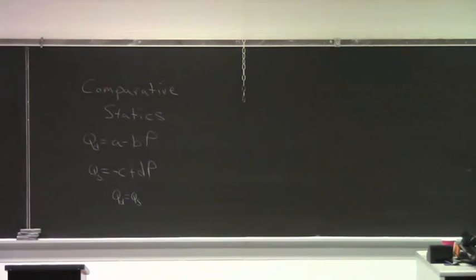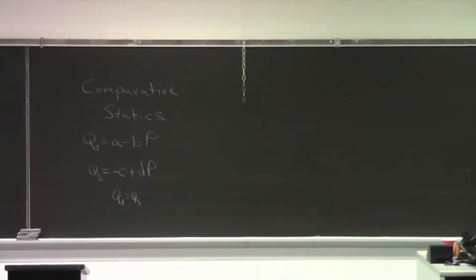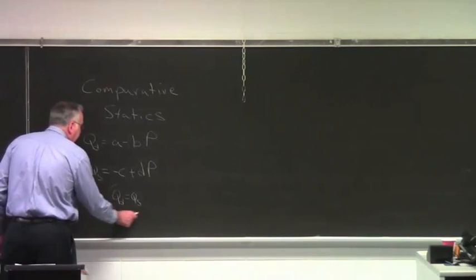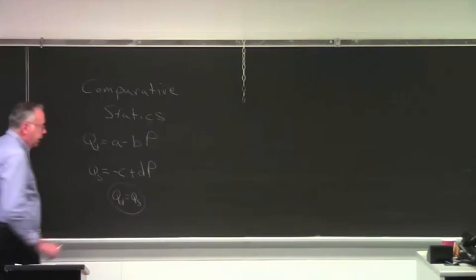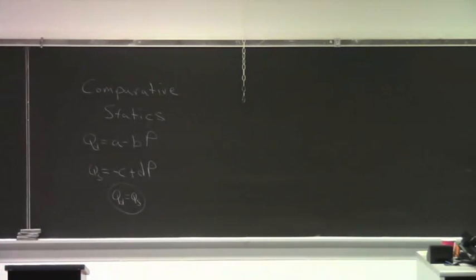In this model there are three equations and three endogenous variables: Qd, Qs, and P. Of course, in equilibrium Qd equals Qs, so taking that into account, you could say there are only two endogenous variables — price and quantity.